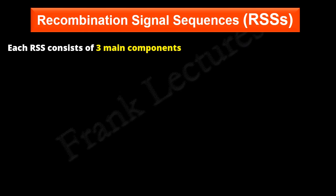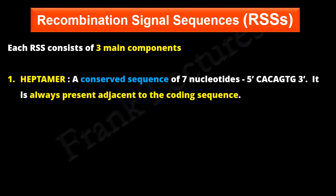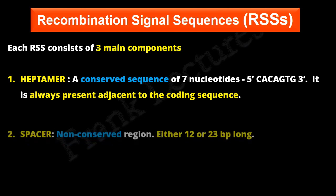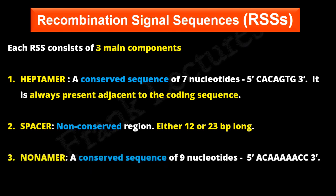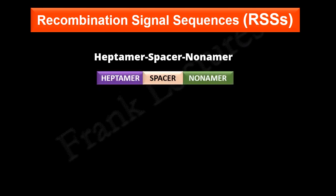Each recombination signal sequence consists of three main components. The first component is a heptamer — a conserved block of seven nucleotides — which is always present adjacent to the coding sequence. The heptamer is followed by the second component, a non-conserved region known as the spacer, which is either 12 or 23 base pairs long. The spacer is followed by the third component, a conserved block of nine nucleotides — thus, a nonamer. Each recombination signal sequence is therefore a heptamer–spacer–nonamer sequence.